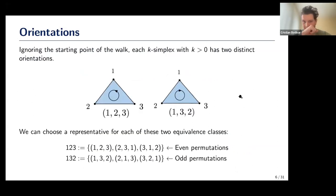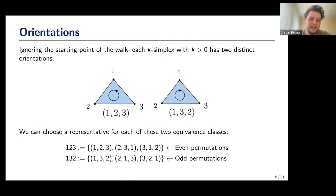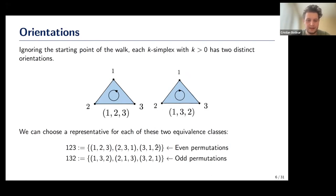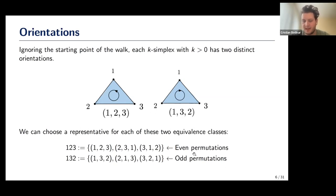There are actually only two unique orientations if we ignore the starting point. For an edge you either go left-to-right or right-to-left; similarly for triangles, either clockwise or anti-clockwise. There are two equivalence classes: (1,2,3), (2,3,1), and (3,1,2) all give the same rotation — corresponding to even permutations — while the other class corresponds to odd permutations.